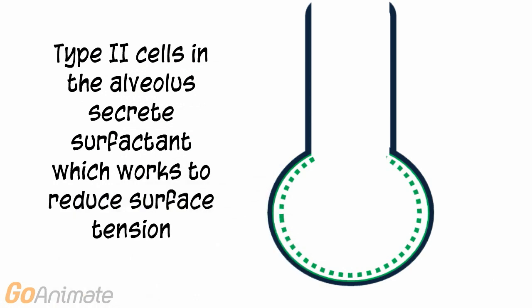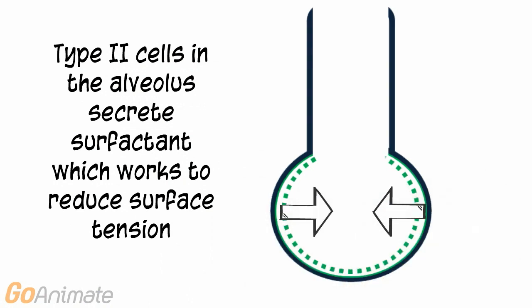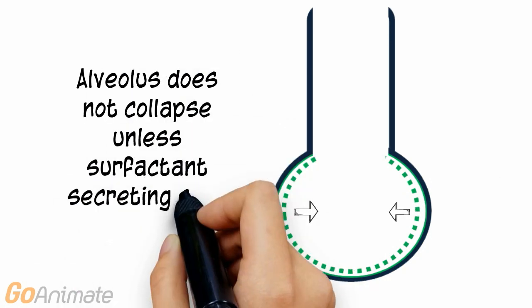However, in a healthy lung, the alveolus does not collapse because of a substance called surfactant that is secreted by type 2 cells lining the alveolus. Surfactant works to reduce surface tension.